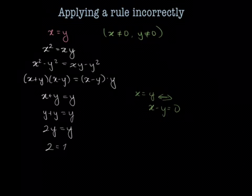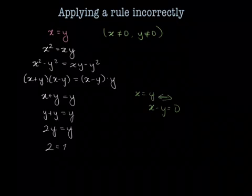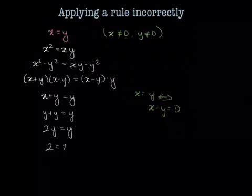And that breaks the rule that allows us to cancel like terms. So this was the actual fallacy. We applied a rule incorrectly. This cancellation of like terms only applies when you're not dividing by 0.